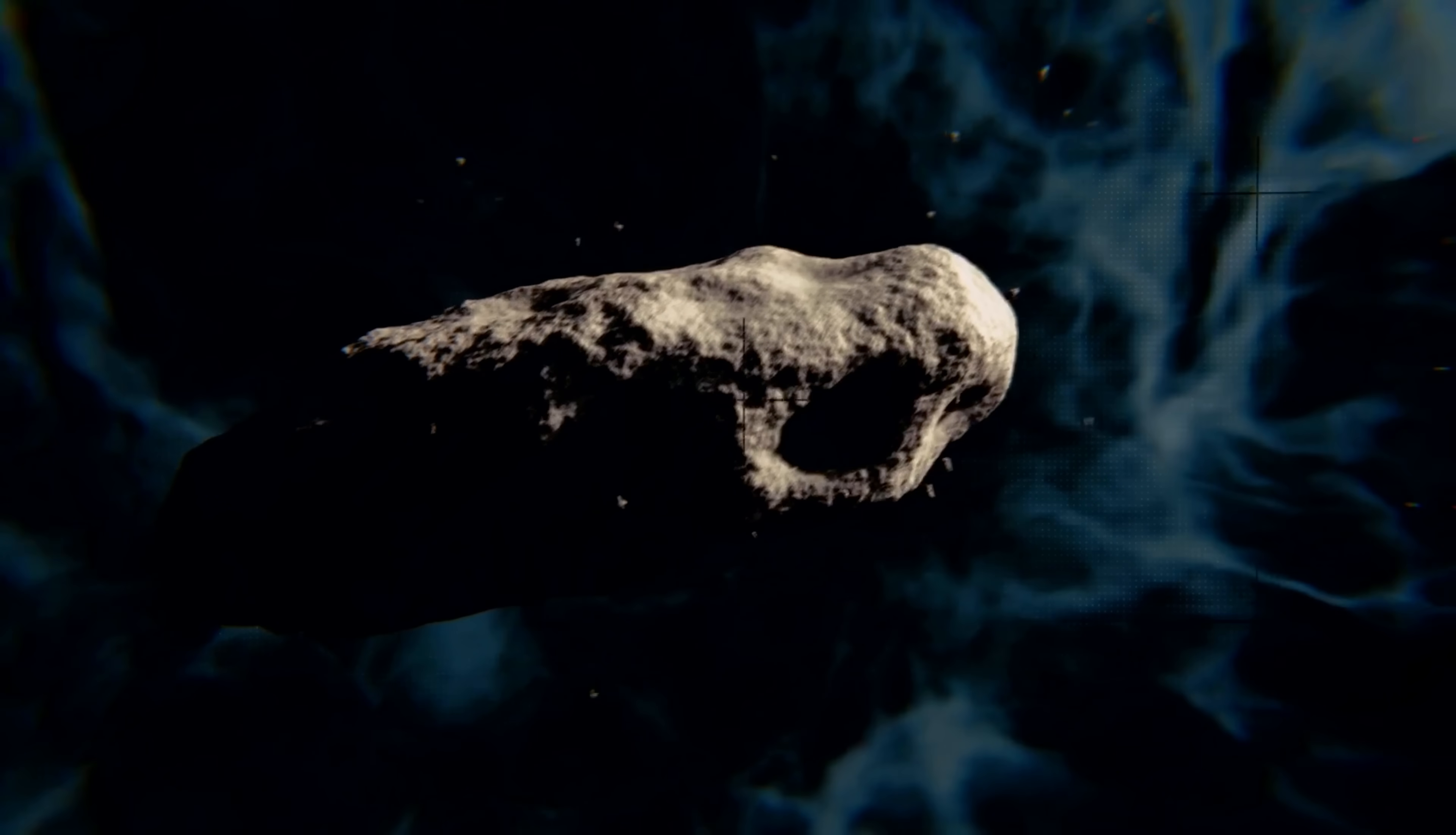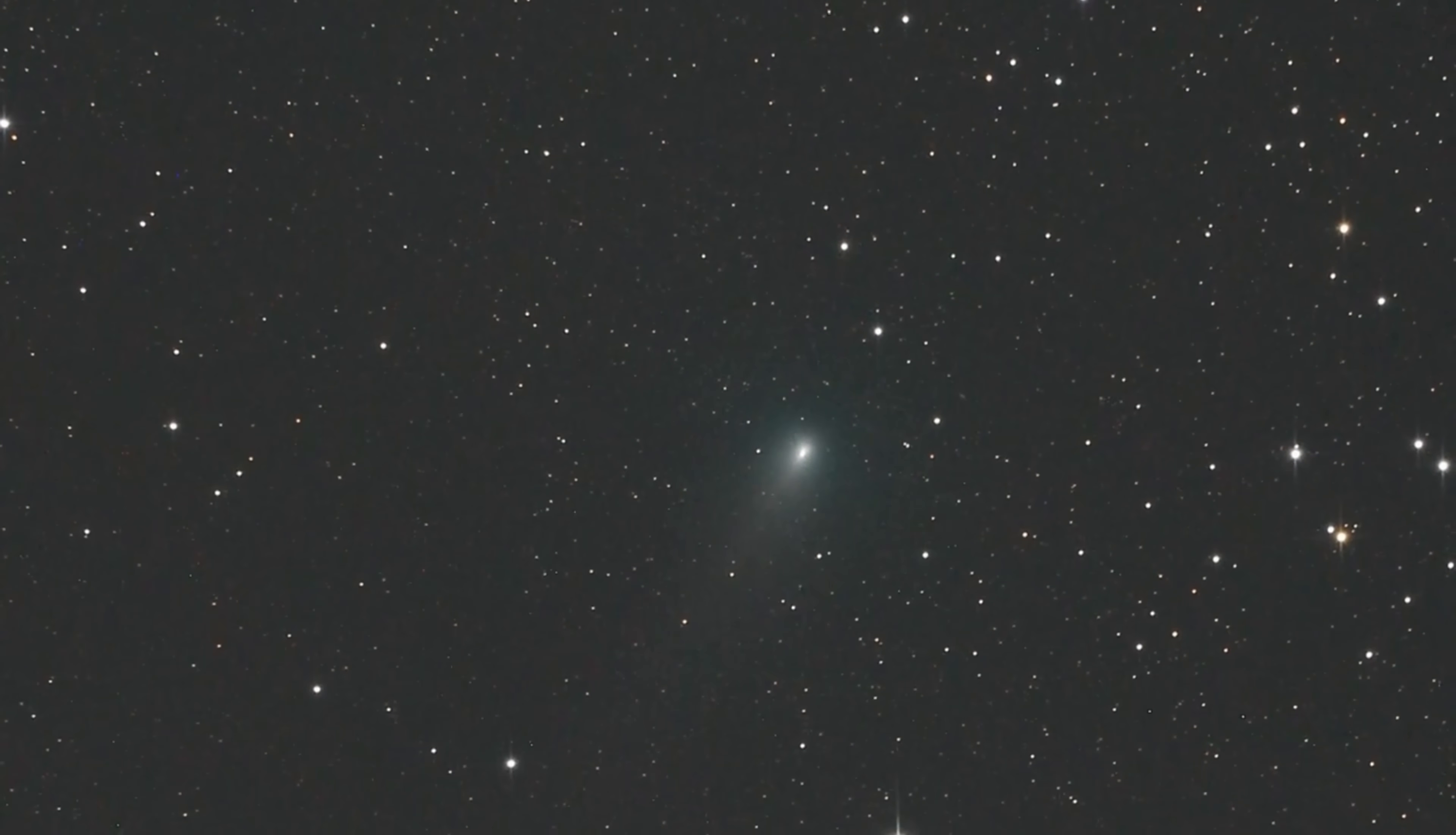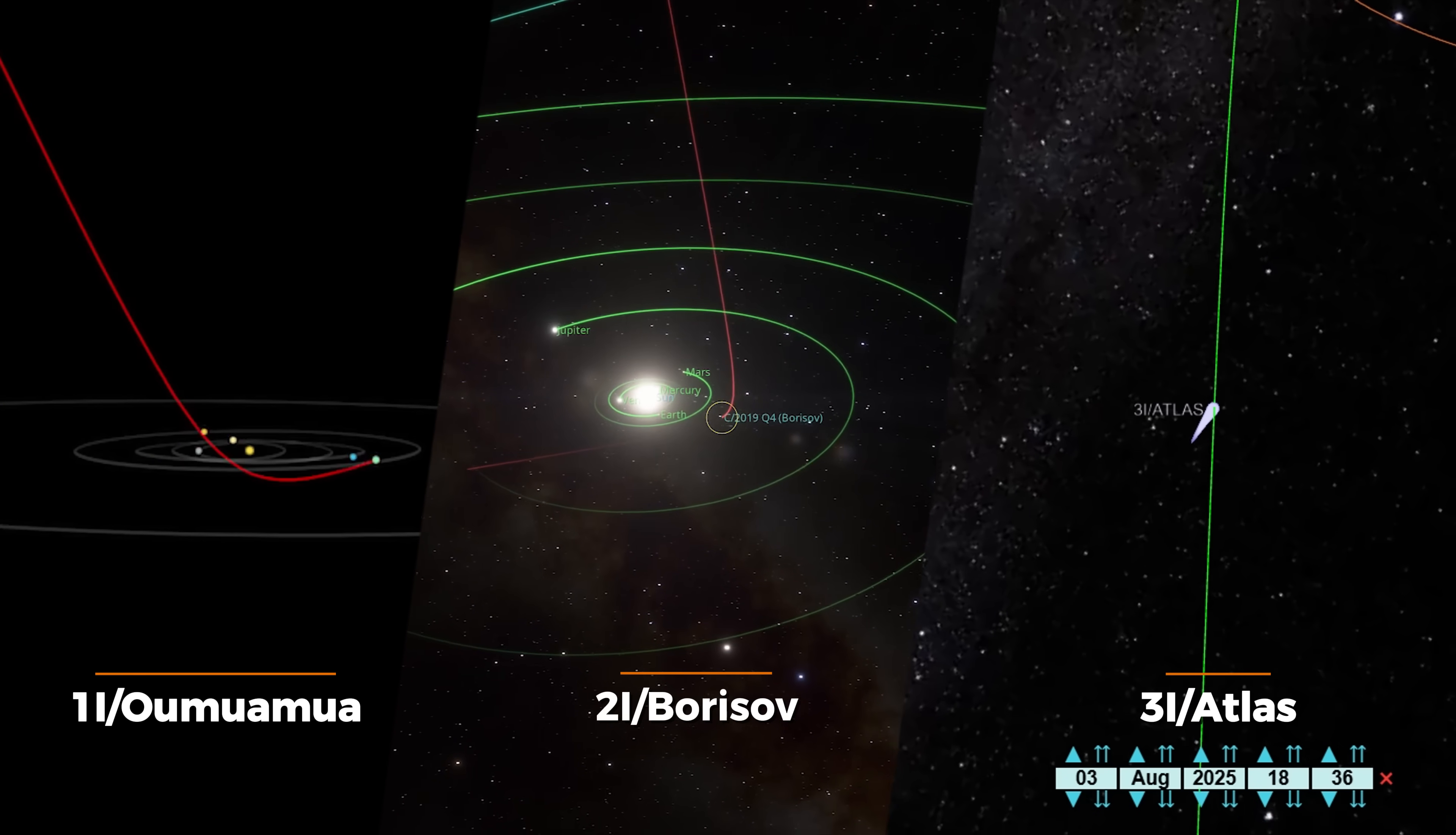A visitor behaving in ways no natural comet or asteroid should—an object whose trajectory, brightness, or composition hints at design. Among the few interstellar travelers ever observed, none has unsettled astronomers or captured imaginations quite like 3i Atlas.